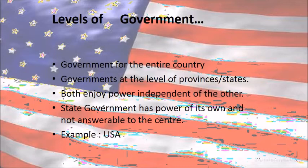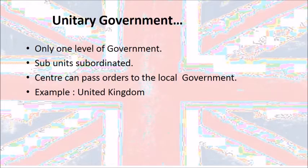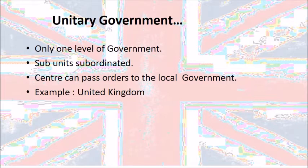In our country also, we have the state government, but they are answerable to the central government. There is another type called a unitary government, where there is only one level of government and all other subunits are subordinate — meaning they are under that level of government. That superior level is called the central government and it can pass orders to the local government. For example, the United Kingdom.